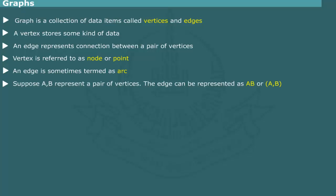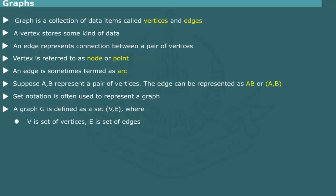Suppose A and B represent a pair of vertices in a graph. The edge connecting A to B can be represented as AB or more commonly as enclosed in a pair of parentheses. In formal theory of graphs, set notation is often used to represent a graph and its associated elements. Thus, a graph G is defined as a set (V, E) where V is a set of vertices and E is a set of edges.